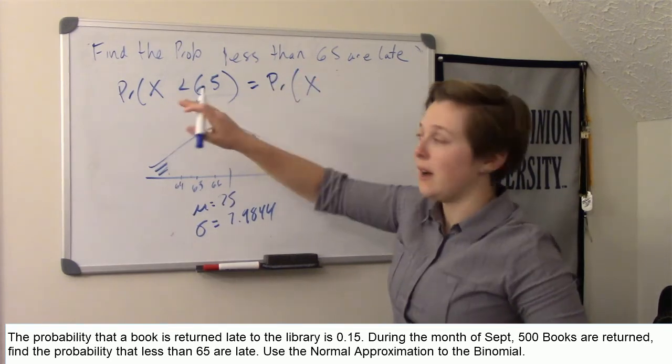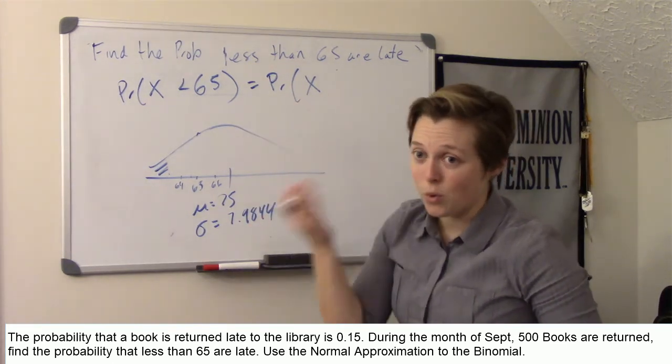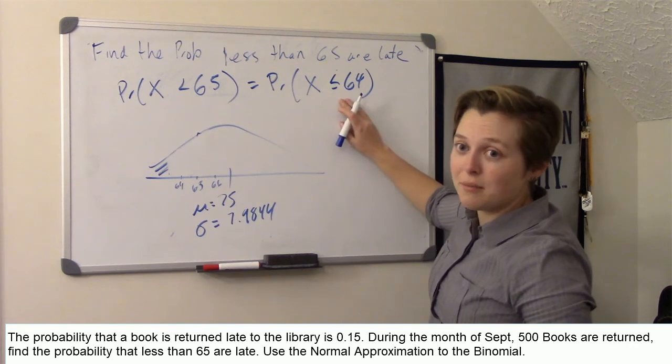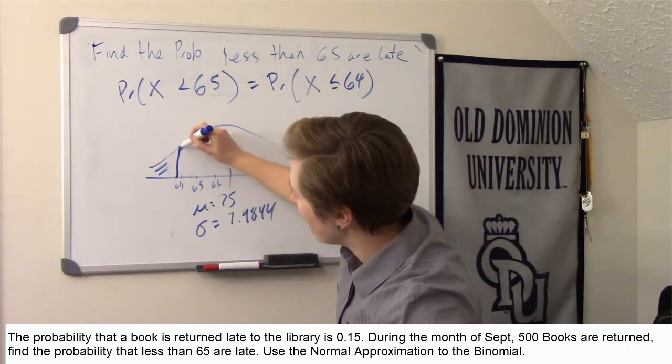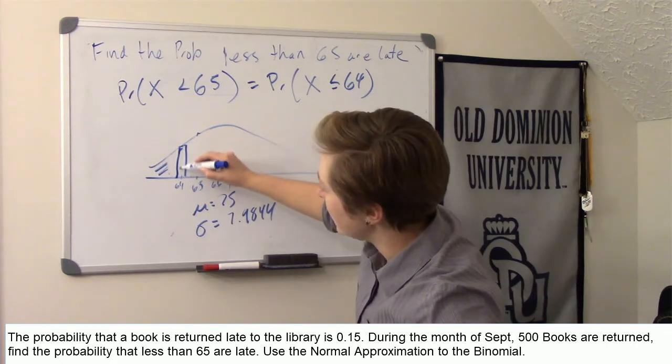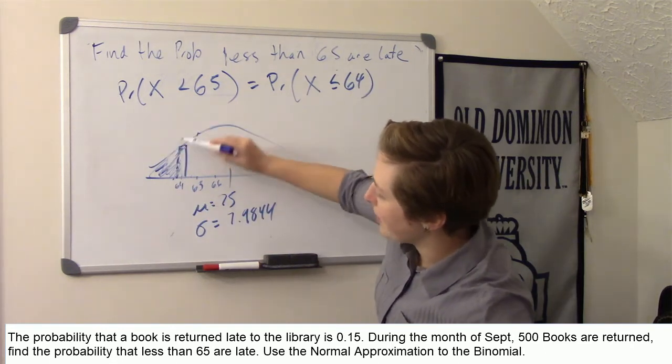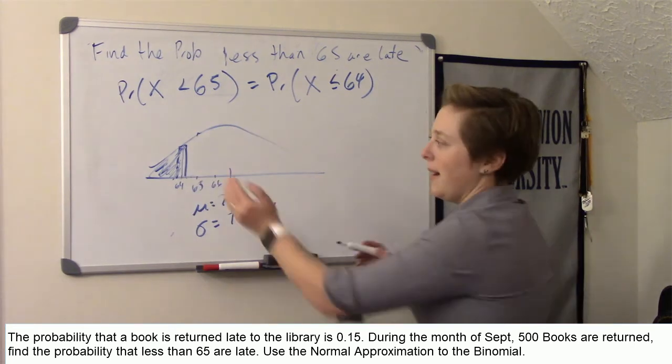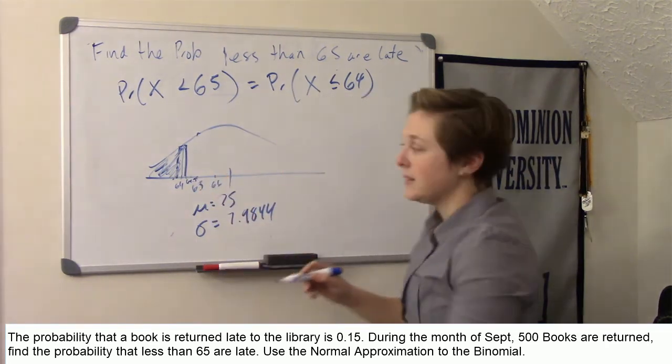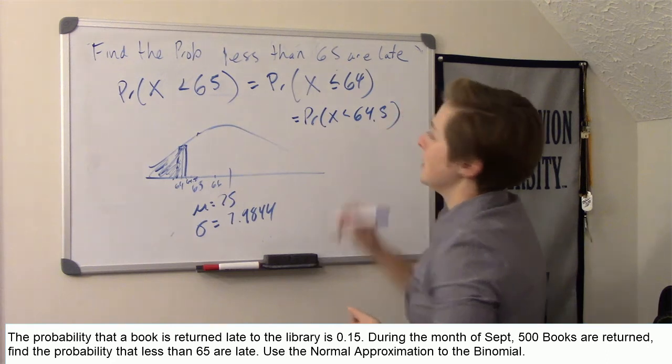So how could I, if x is discrete, how could I rewrite that with an equal sign? Less than 65, if x is discrete, it's the same thing as less than or equal to 64. So that's an important first step. Don't forget to do that. So my bar should really be around 64. So less than or equal to 64. So when I do equal to 64, you see that bar, it only covers half of it. So that's why I need to extend it a little bit further in this direction. So what would that be, 64.5. That's my continuity correction.